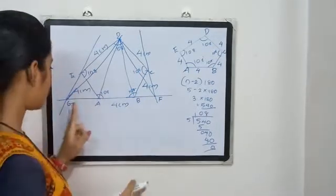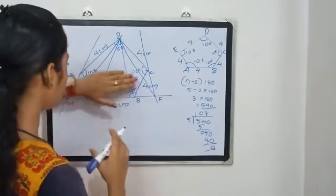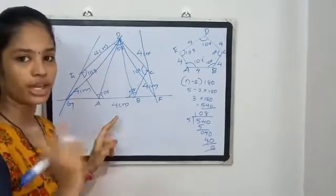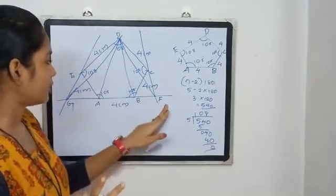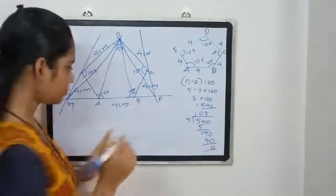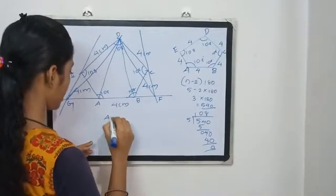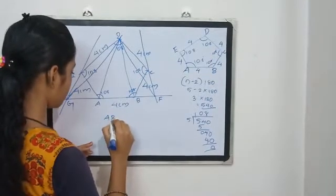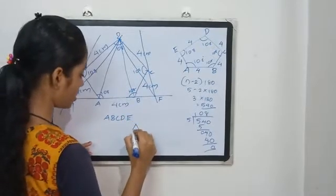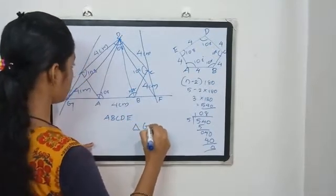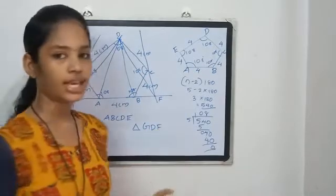What is the triangle? The triangle is G, D, F. The pentagon is A, B, C, D, E. The triangle GDF has the same area as the pentagon. This is the same area.